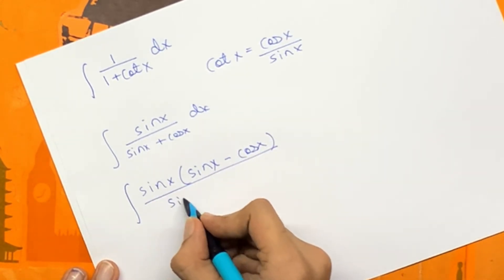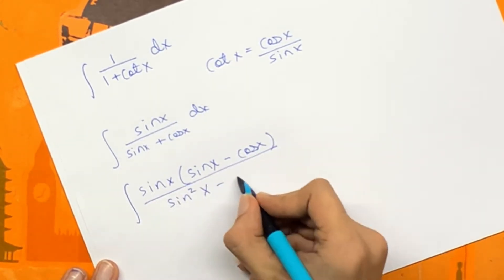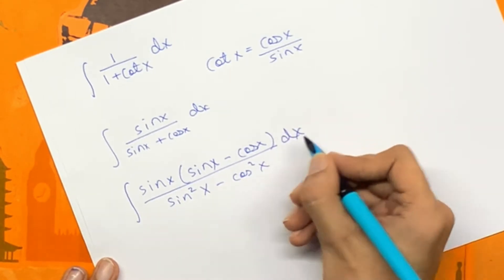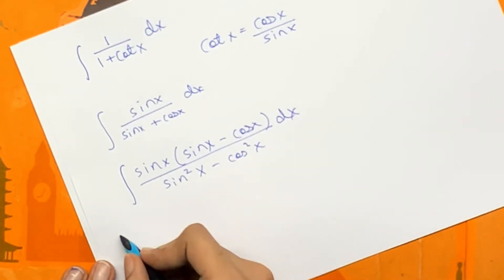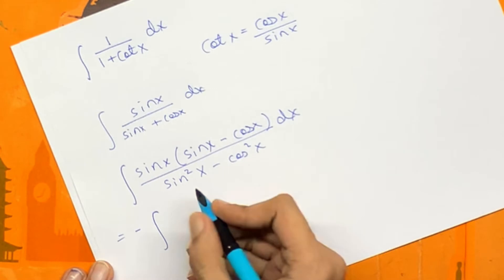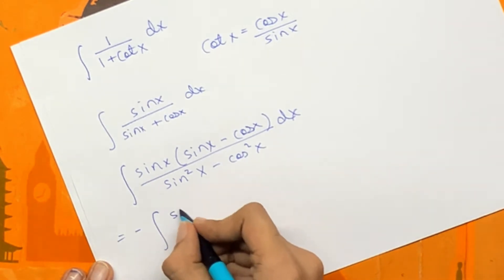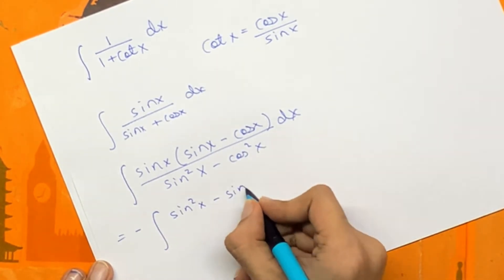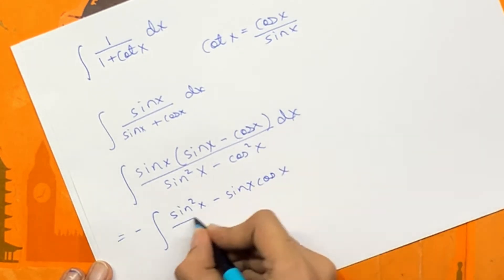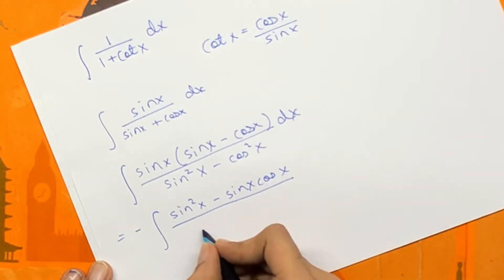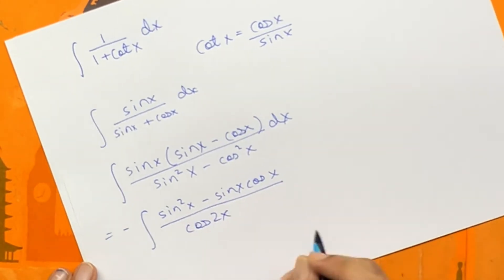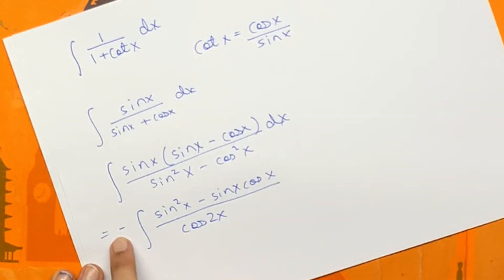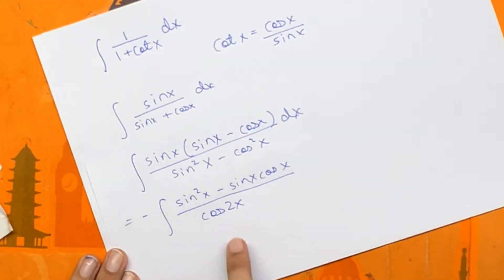We can multiply the numerator and denominator by sin x minus cos x. In the denominator we have sin square x minus cos square x, and sin x cos x. So now we have minus 1 times the integral of sin square x minus sin x cos x upon cos 2x. If you notice, sin square x minus cos square x is minus cos 2x.